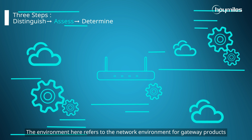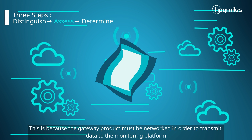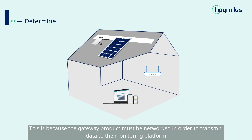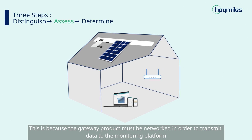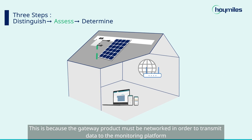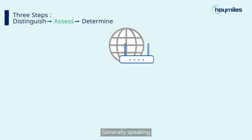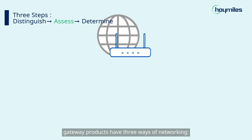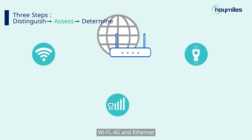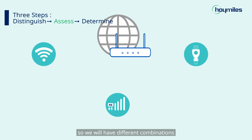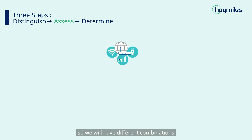The gateway product must be networked in order to transmit data to the monitoring platform. Generally speaking, gateway products have three ways of networking: Wi-Fi, 4G, and Ethernet, so we will have different combinations.